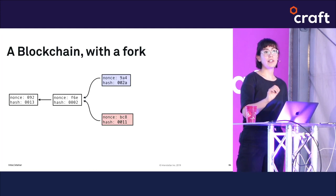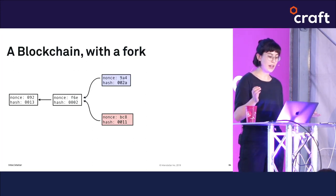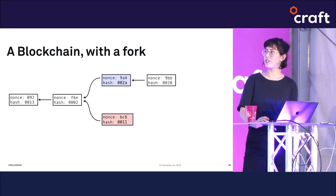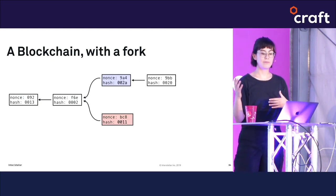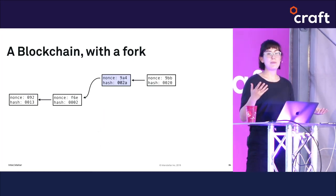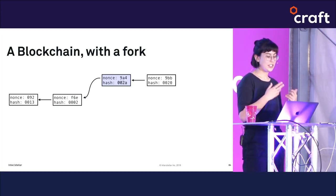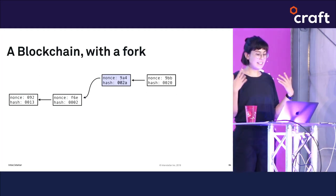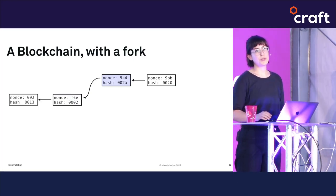However, in Bitcoin, nodes are incentivized to avoid this problem. The network is programmed to consider the longest chain the valid one. So if the chain built on the purple block becomes longer than the one built on the red one — even by just one block — nodes mining on the red chain will hop over and start mining on the purple chain, orphaning the red block. This is why people using Bitcoin are advised to wait for 10 blocks to land before considering a transaction finalized.